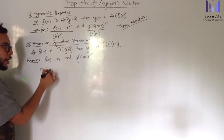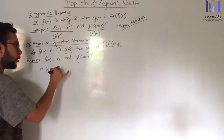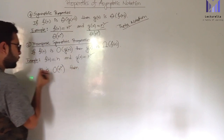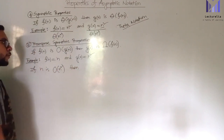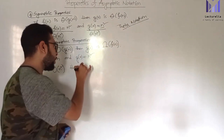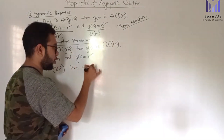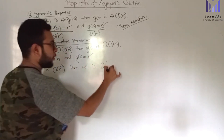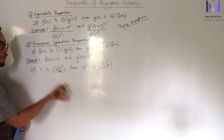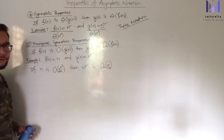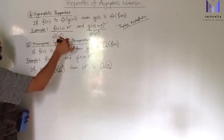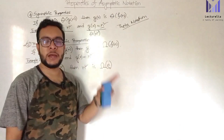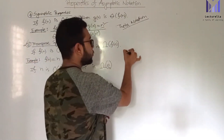Say f of n is Big-O of g of n, meaning n squared, or so.